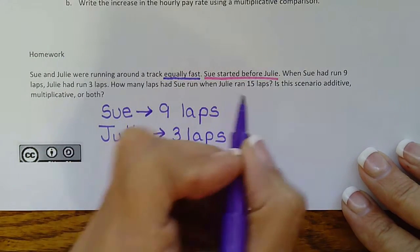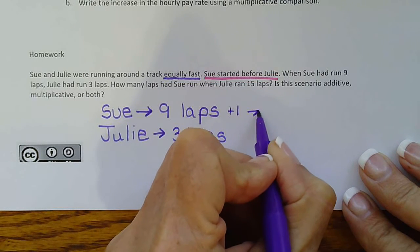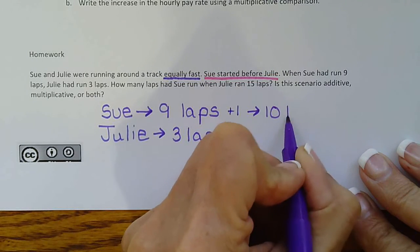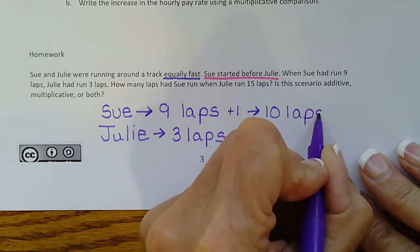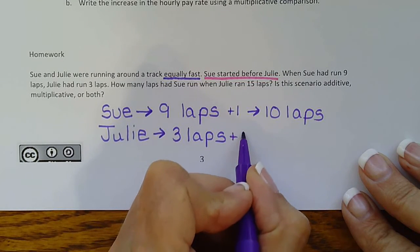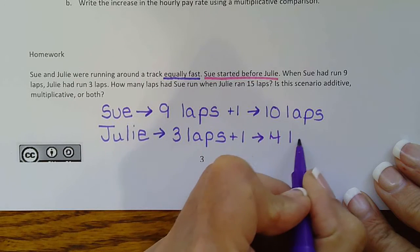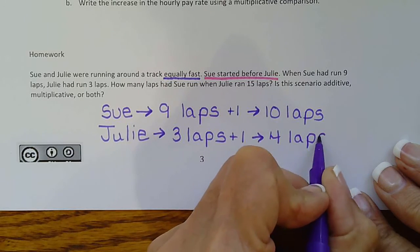So if Sue runs another lap, she then has run ten laps, correct? And if Sue ran another lap, so did Julie because they're going equally fast. So Julie will now have four laps. And I'll show you why I'm doing this in a second.